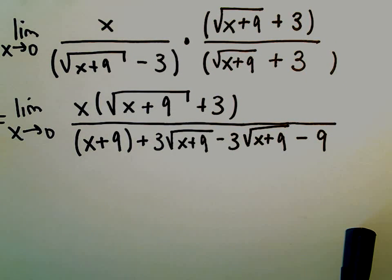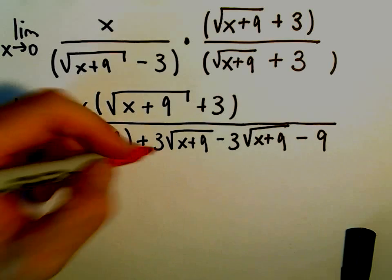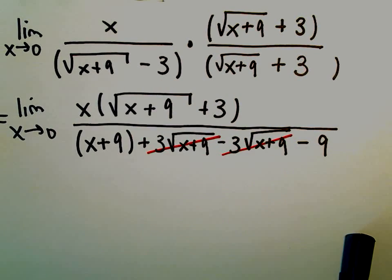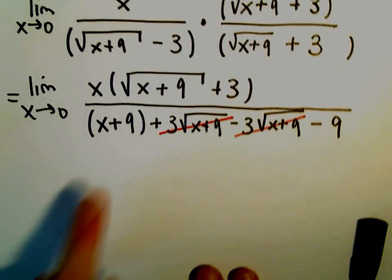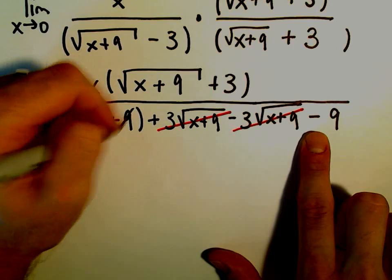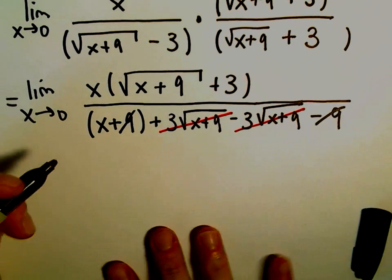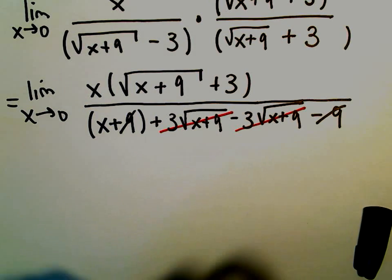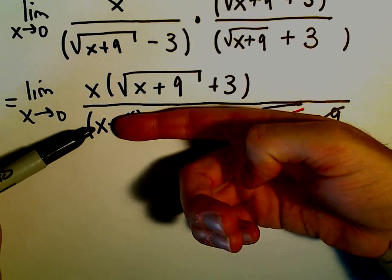Well, notice that we've got a positive 3 square root of x plus 9 and a negative 3 square root of x plus 9. Those just cancel out. And notice also we're left with x plus 9 minus 9. So really, the positive 9 and the negative 9 would also cancel. Well, if you think about it now, the only thing really left in the denominator would just be the x.